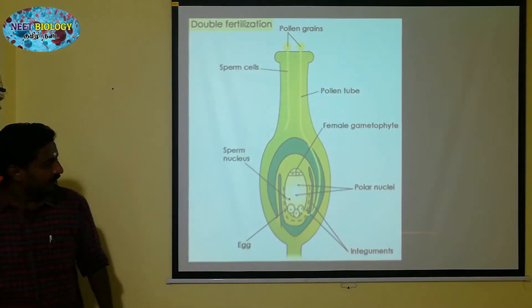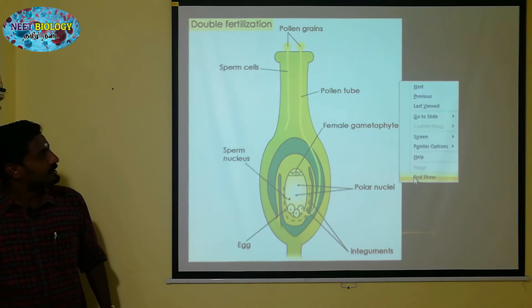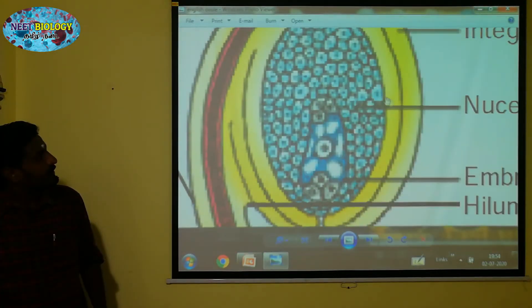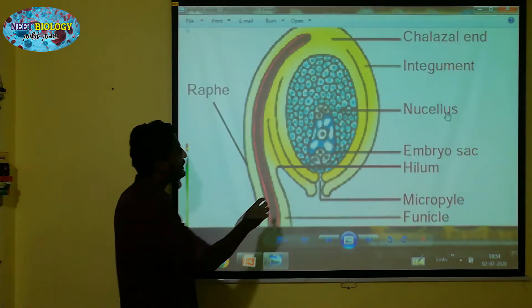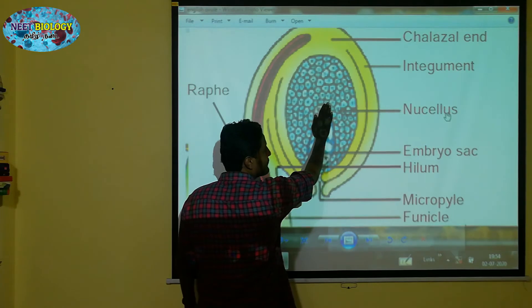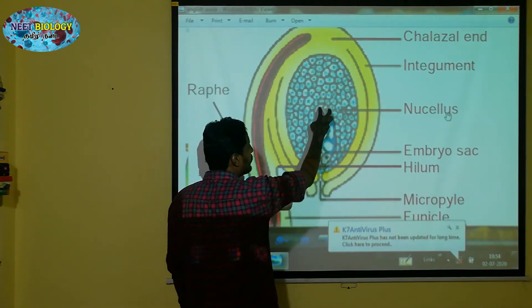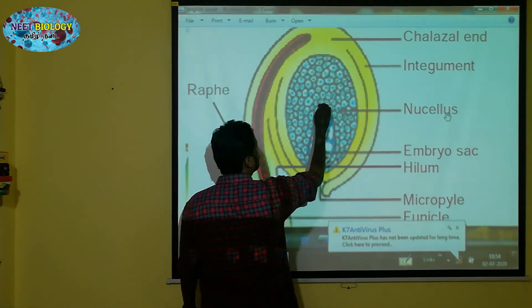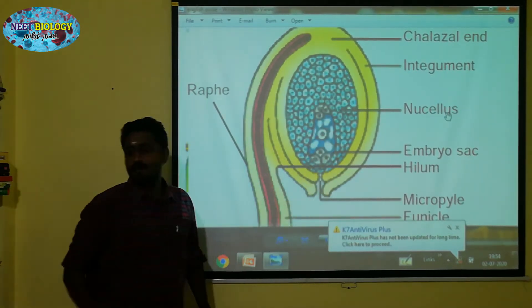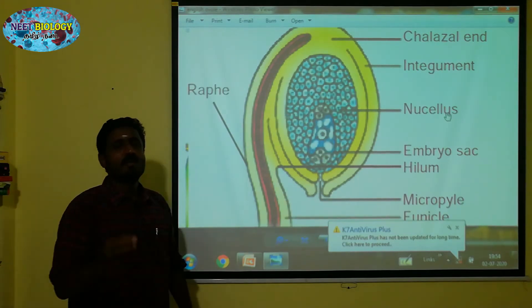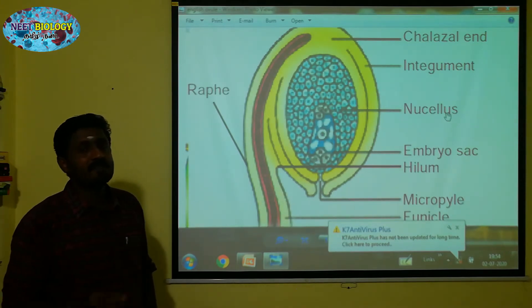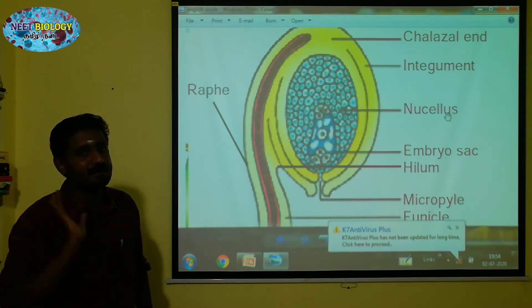If you look at the embryo, it is a new cell. Now the embryo is developed and it's a new cell. The remaining new cell — that is the perisperm.